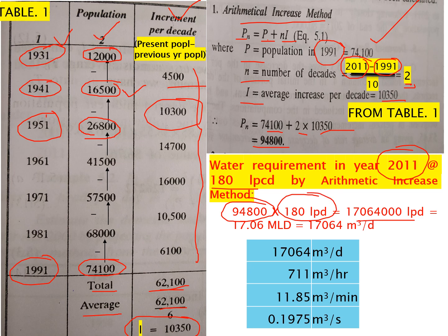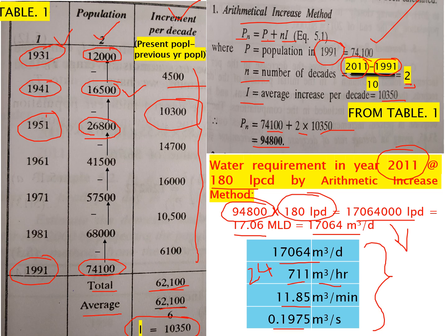So 94,800 × 180 liters per day gives us the total demand in liters per day. Dividing by 1,000 we convert to cubic meters — 17,064 m³ per day. In one day there are 24 hours, so dividing by 24 gives 711 m³ per hour. Dividing by 60 gives 11.85 m³ per minute. And dividing by 60 again gives the flow in m³ per second.